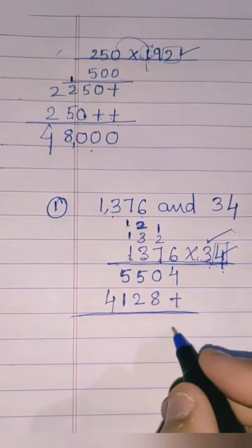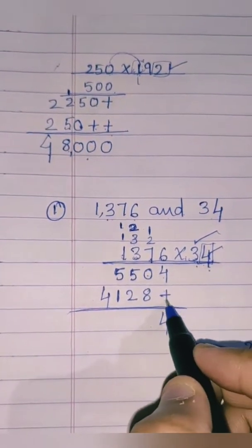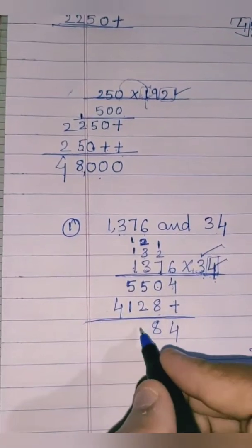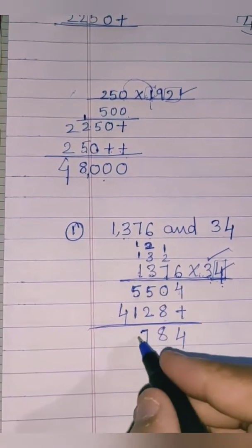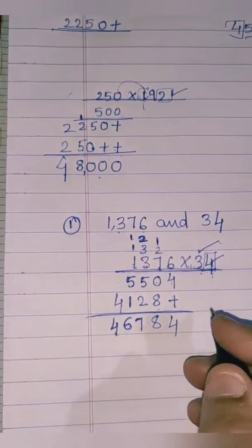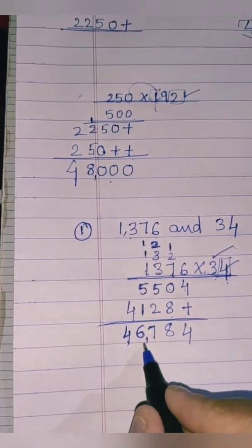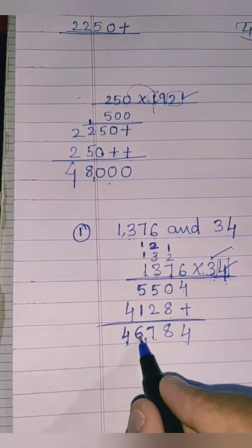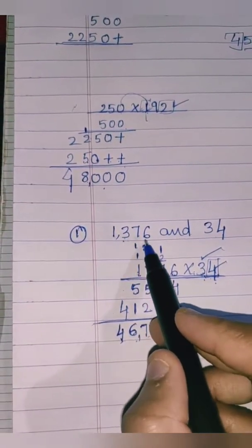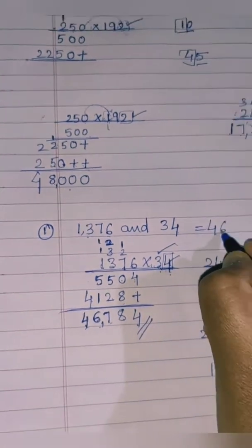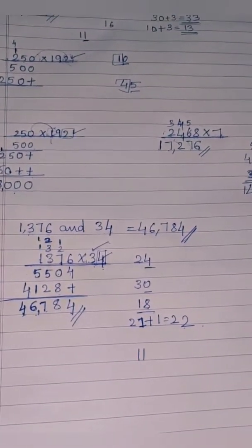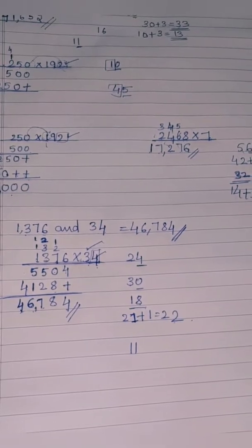Now let's add all the partial products. 4; 0 plus 8 is 8; 5 plus 2 is 7; 5 plus 1 is 6; and 4 stays as is. So the answer is 46,784. This is the product of 1376 and 34.